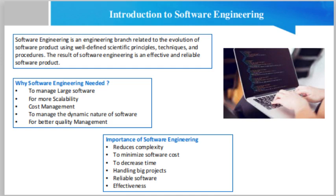Characteristics of a good software engineer: the features a good software engineer should possess are exposure to systematic methods, familiarity with software engineering principles, good technical knowledge of the project range such as domain knowledge, good programming abilities, good communication skills — comprising oral, written, and interpersonal skills — high motivation, sound knowledge of fundamentals of computer science, intelligence, and ability to work in a team.